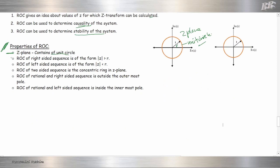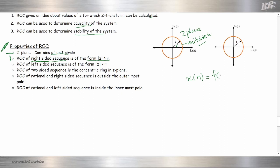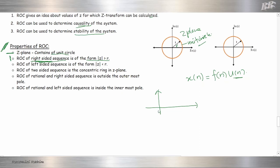First ROC property: ROC of a right-sided sequence. Let's say we have X(N) equal to the unit function U(N). For the unit function, it is a right-hand sided sequence — from 0, 1, 2, 3, until infinity.